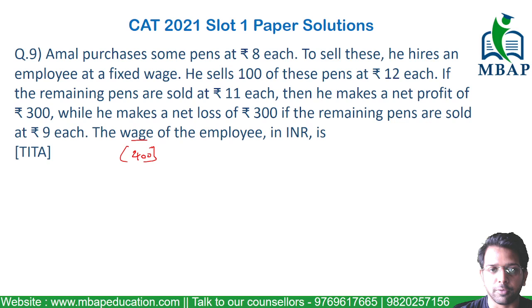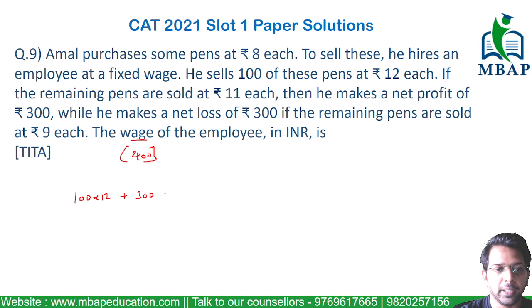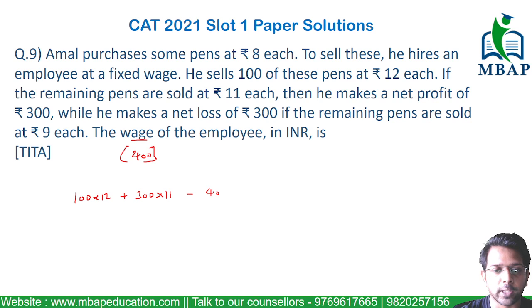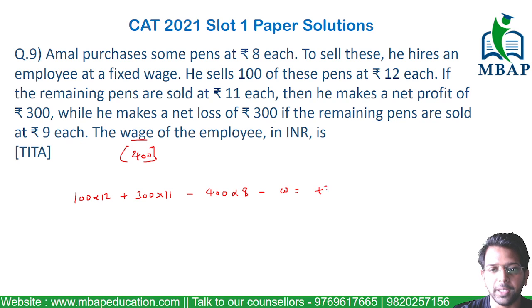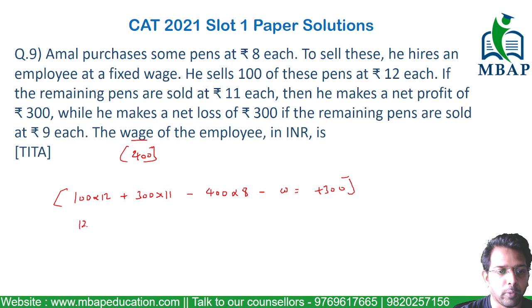The question is to find the wage or remuneration of this employee. Taking the total sales: the first 100 pens sold at Rs.12 each gives Rs.1200, and the next 300 pens sold at Rs.11 each gives Rs.3300. The cost price for 400 pens is Rs.8 × 400 = Rs.3200. So: 1200 + 3300 − 3200 − wage = 300.